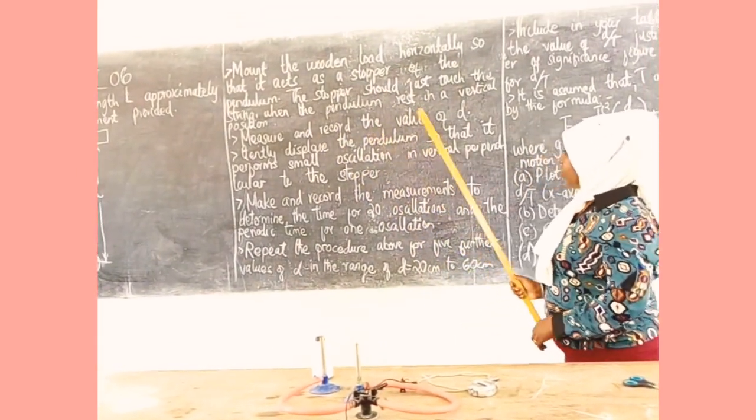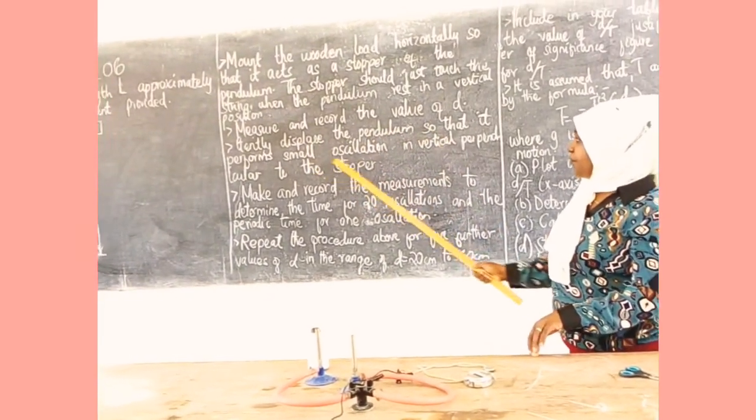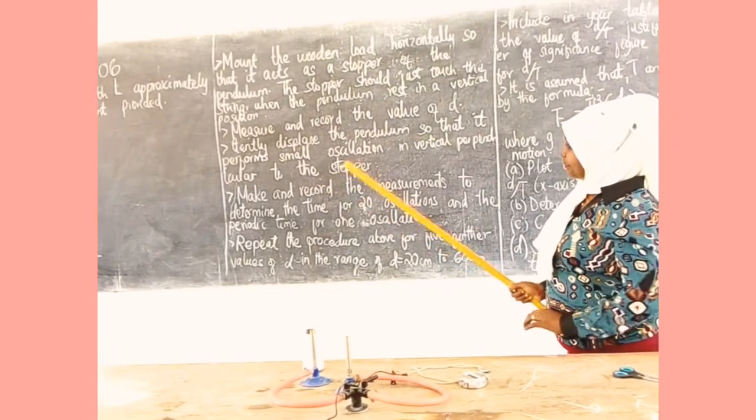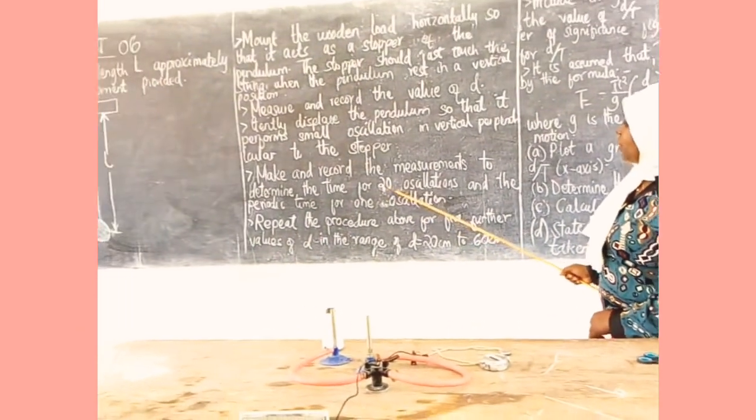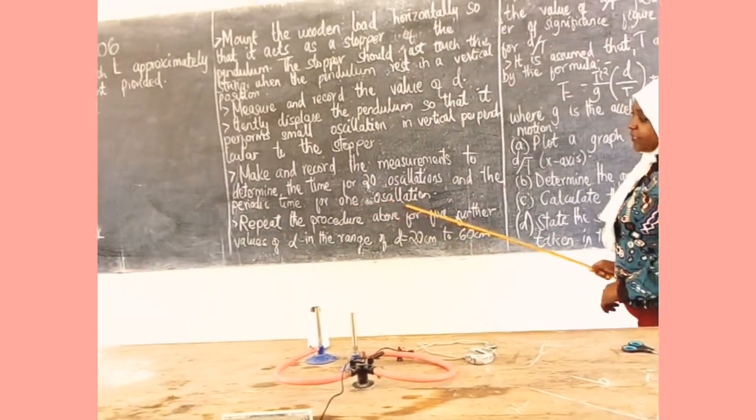Measure and record the velocity. Displace the pendulum so that it performs small oscillations in a vertical plane perpendicular to the stopper. Make and record the measurements to determine the time for 20 oscillations and the periodic time for 1 oscillation.